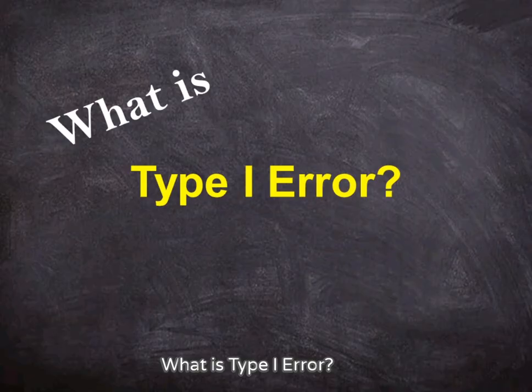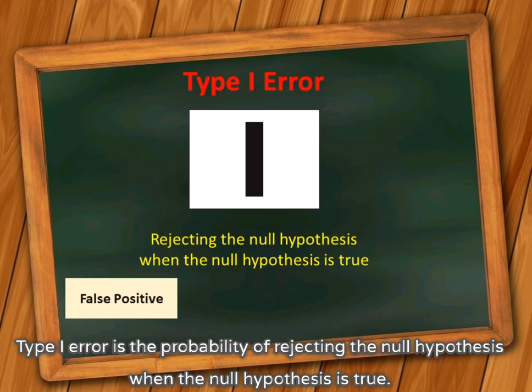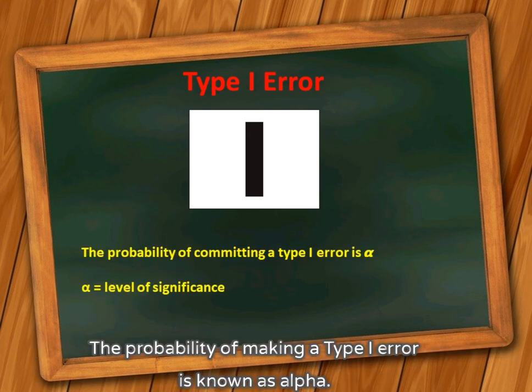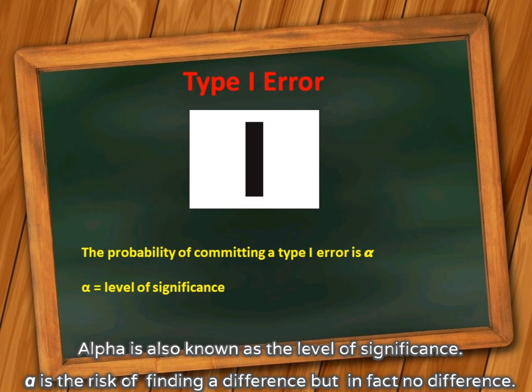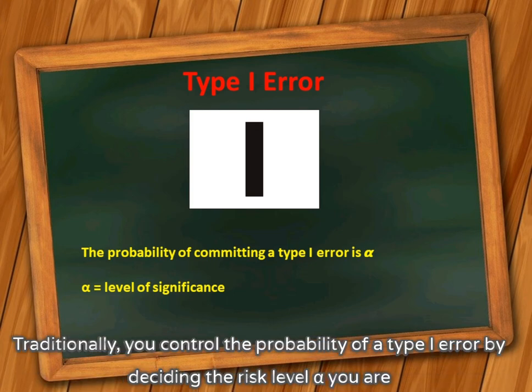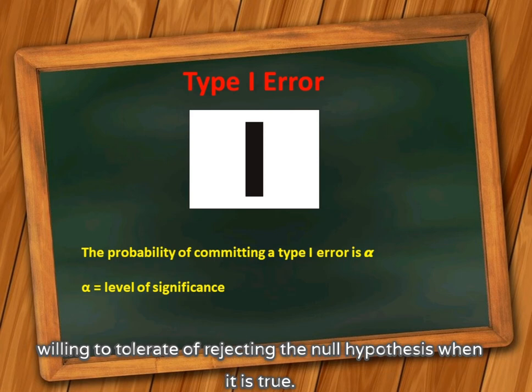What is type 1 error? Type 1 error is the probability of rejecting the null hypothesis when the null hypothesis is true. The probability of making a type 1 error is known as alpha. Alpha is also known as the level of significance. Alpha is the risk of finding a difference but in fact no difference. Traditionally, you control the probability of a type 1 error by deciding the risk level alpha you are willing to tolerate of rejecting the null hypothesis when it is true.